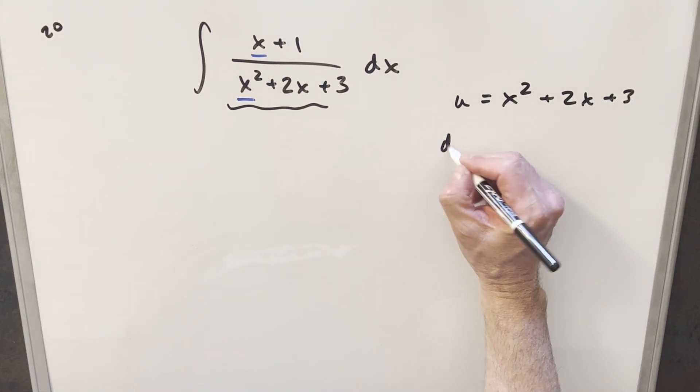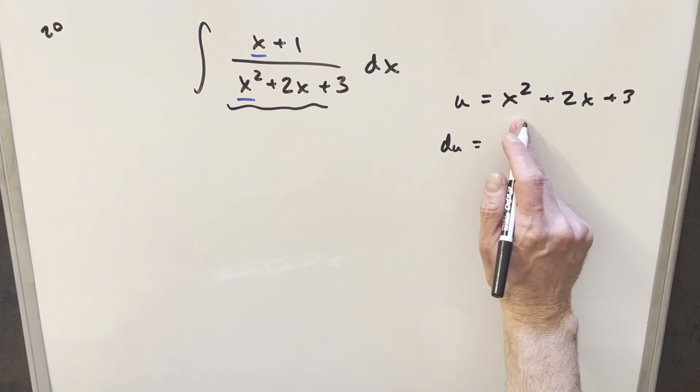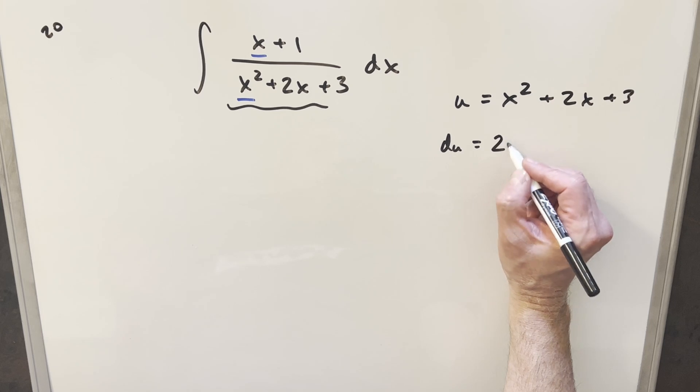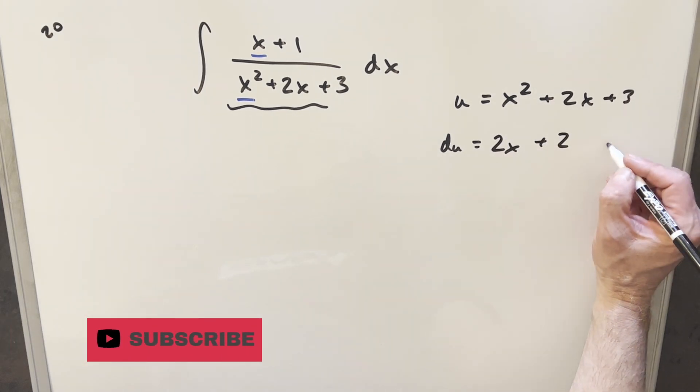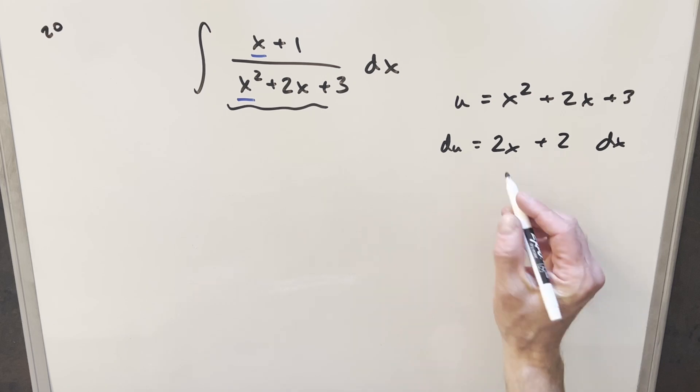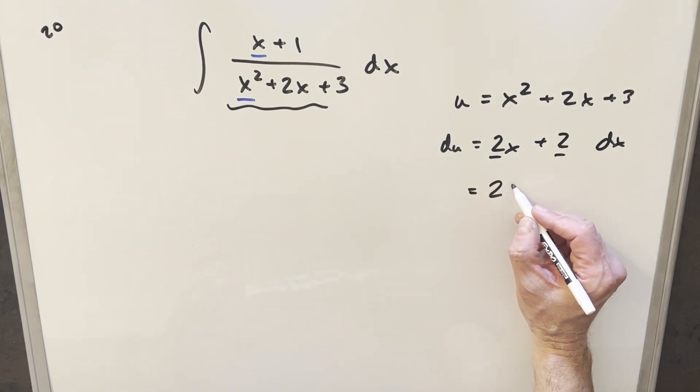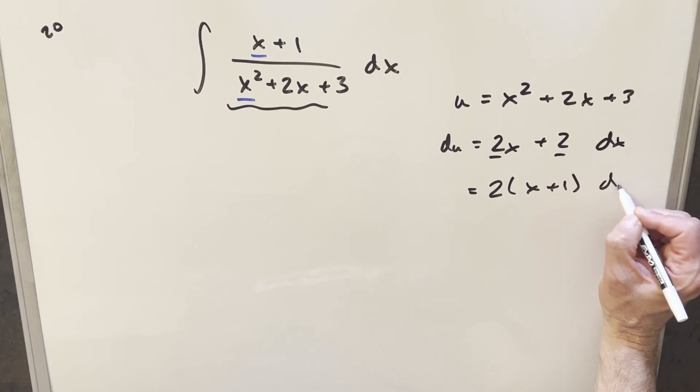We'll have our u equal to x squared plus 2x plus 3. Then I'll just go ahead and take a derivative on this. So for the du value, this is going to become derivative of x squared is 2x. Derivative here is going to be a plus 2. Derivative of this is 0, so we'll have a dx on the end. But now because we have a 2 in common on this, what I can do is just factor this, and I can write this as 2 times x plus 1 dx.